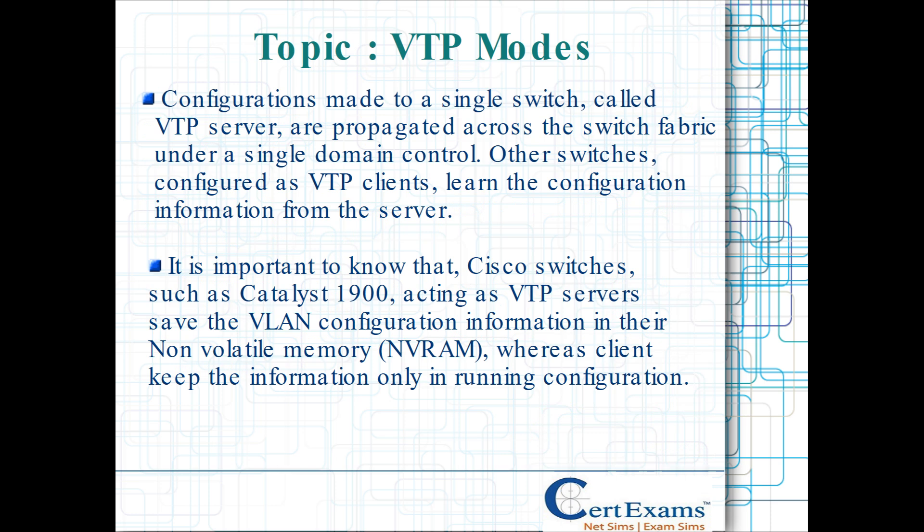Configurations made to a single switch, called the VTP server, are propagated across the switch fabric under a single domain control. Other switches, configured as VTP clients, learn the configuration information from the server. It is important to know that Cisco switches, such as the Catalyst 1900, acting as VTP servers save the VLAN configuration information in their non-volatile memory (NVRAM), while VTP clients keep the information only in running configuration.